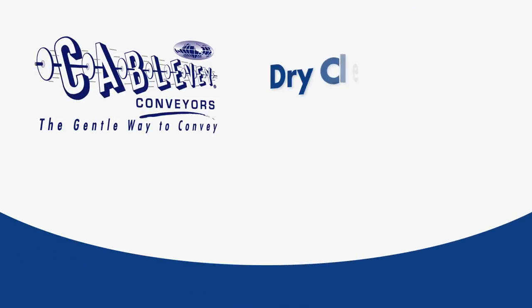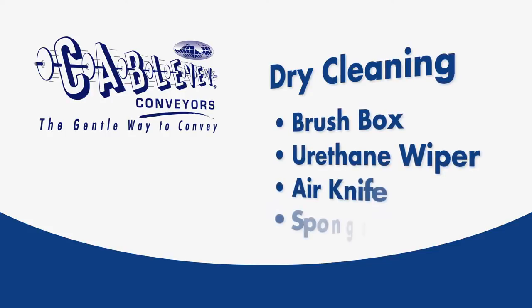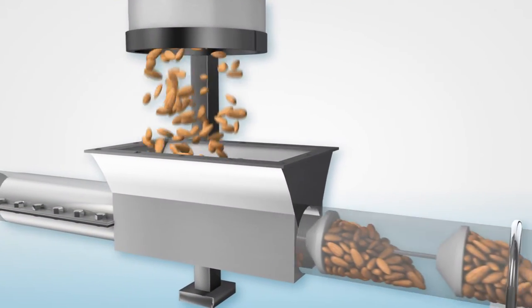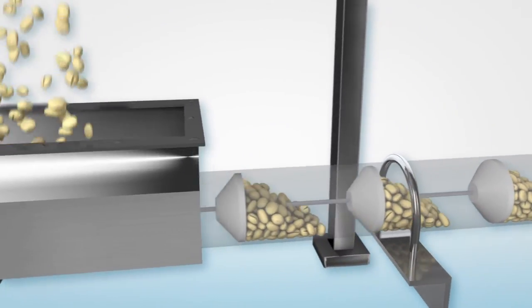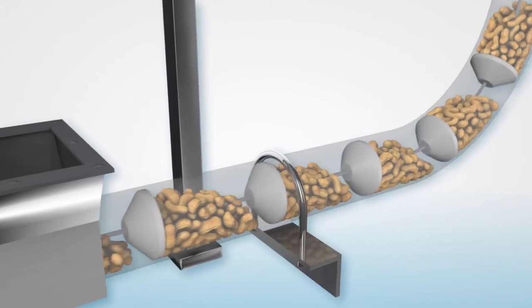Cablevay Conveyors has recognized the need for different cleaning processes for different material applications. After materials like almonds, peanuts and pistachios pass through a system, brushing fines off of discs and cable is sometimes needed before product changeover occurs or just for maintenance.